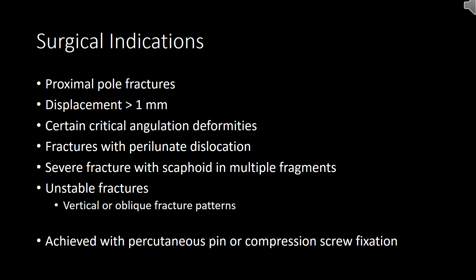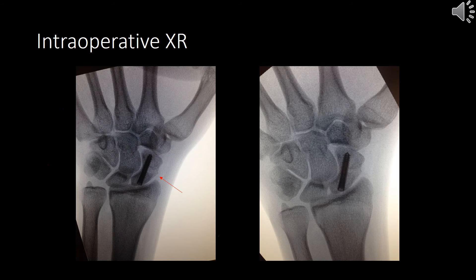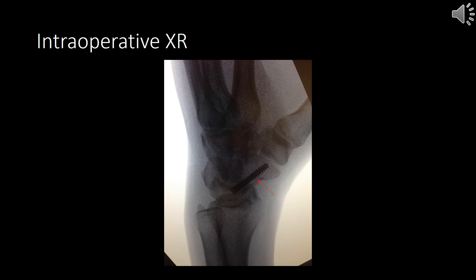Surgery is typically achieved with a percutaneous pin or compression screw fixation. Here are two x-rays showing percutaneous screw fixation from a dorsal approach with anatomic reduction of the fracture. The lateral view shows excellent reduction of the fracture with the compression screw down the center of the fracture.